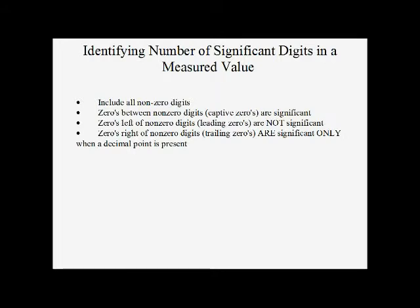Zeros to the right of non-zero digits are significant only when a decimal point is present. If there's no decimal point present, those zeros to the right are showing us where the decimal point belongs — they're holding the decimal point for us, so they are not significant. But if we have a decimal point anywhere in the number, the zeros on the right side of the non-zero digits are not holding the decimal point, so that means they have been measured and their value is zero. So they are significant.